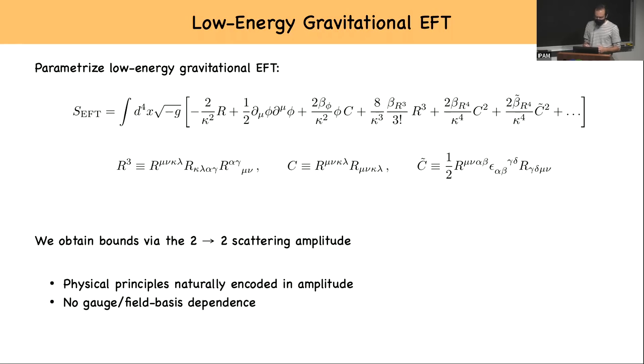So the setup for our low energy theory is we start with Einstein-Hilbert and we correct it with an infinite tower of higher derivative operators. Now to match the string theory, I'm also including the possibility of a massless dilaton that will be absent for the case of the massive loops. So now we phrase the full discussion for the bounds in terms of the two-to-two scattering amplitude. And the reason for that, in my opinion, is that the physical principles we want to impose on the complete theory of gravity are naturally encoded in the scattering amplitude.